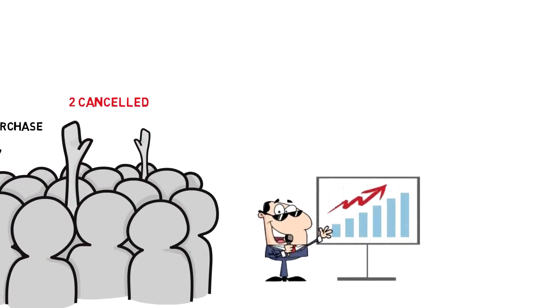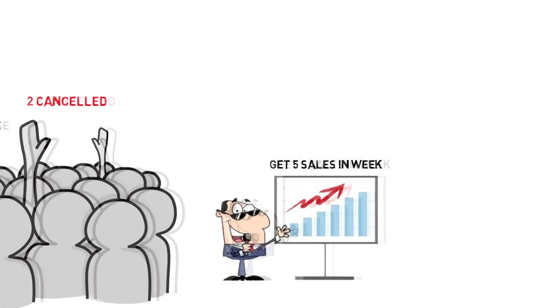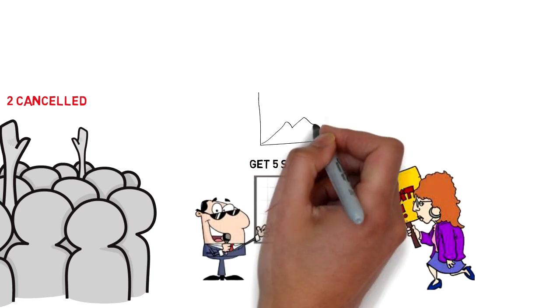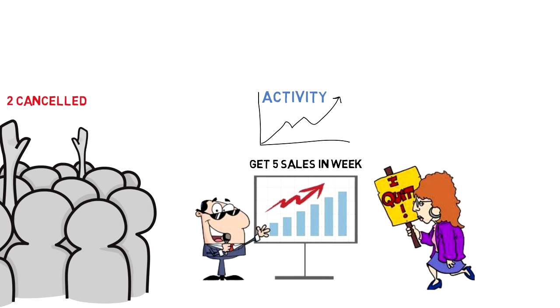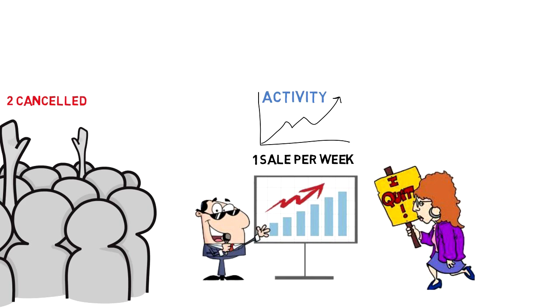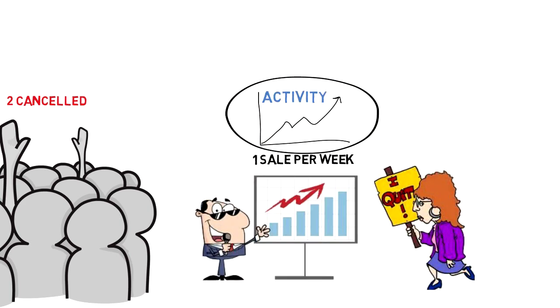What most of the people do at this point where they wanted to get five sales in a week but they only got one, most of the people will quit. But what you have to do in this case scenario is you have to increase the activity to achieve your goals. Don't lower the target, don't change your goal to one sale per week. You have to increase your activity or how Grant would say you have to 10x your efforts and achieve your goals.